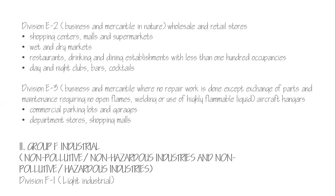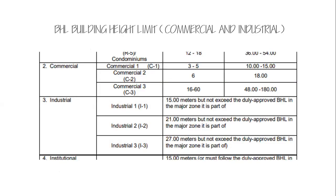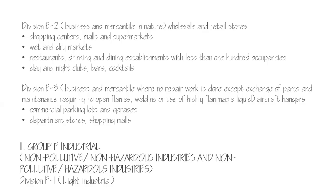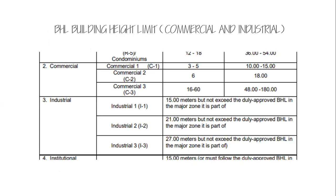For Group F — industrial — we'll focus on light industrial. This covers any non-hazardous, non-polluting processing centers, industrial farms, and post-harvest processing centers. We will focus specifically on the light industrial classification.